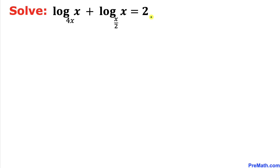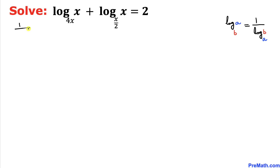Here's the key fact we are going to use: log of a with base b can be written as 1 divided by log of b with base a. In other words, the argument and base get switched in reciprocal form. So the left-hand side becomes 1 divided by log of 4x with base x, plus 1 divided by log of (x/2) with base x, equals 2.